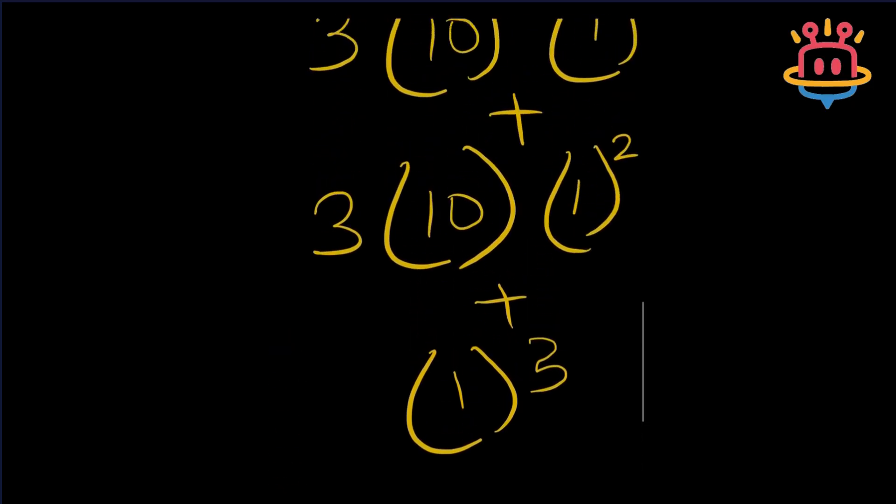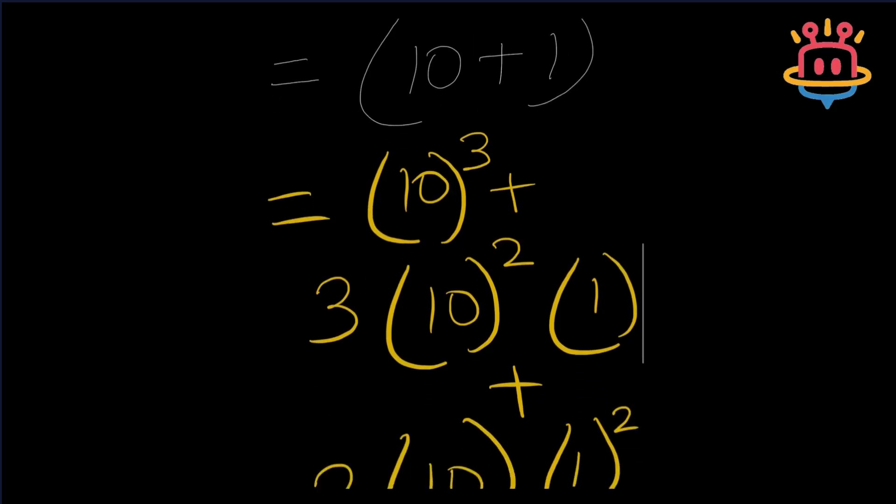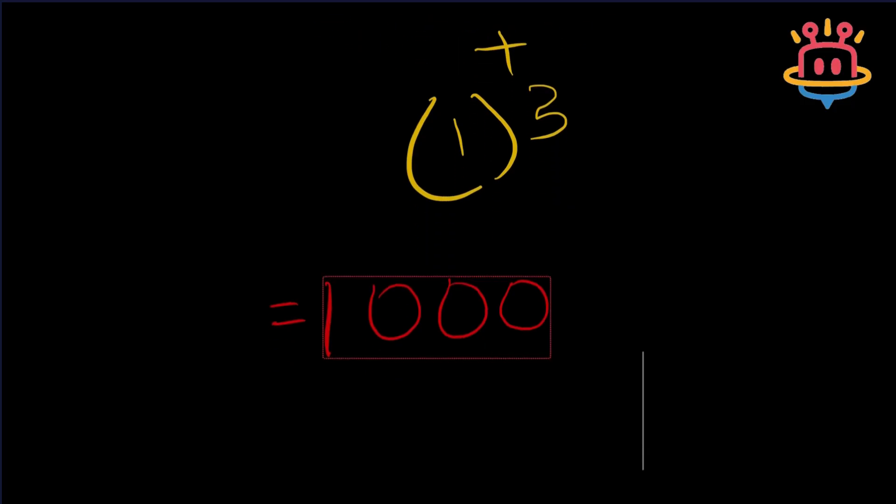What did we have first? We initially had cube of 10, so cube of 10 would simply be 1 and 3 zeros, that is 1000. Then we had...